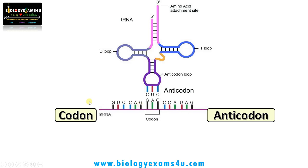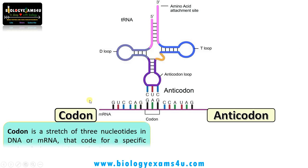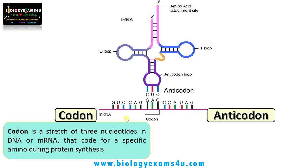A codon can be defined as a stretch of three nucleotides in a DNA or mRNA that calls for a specific amino acid during protein synthesis. As you see, this is a mRNA and this is a tRNA with anticodon. This triplet — GAG — is called a codon on mRNA.